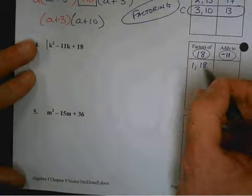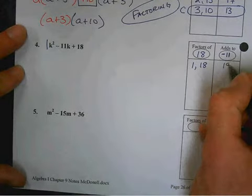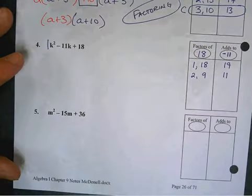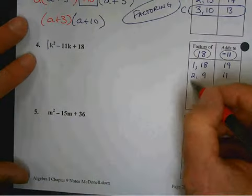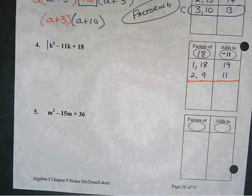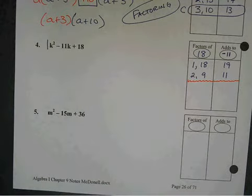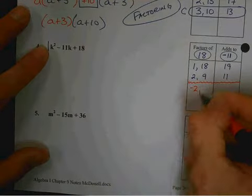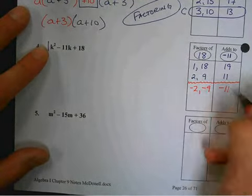Factors of 18. 1 and 18. 1 plus 18 is? 19. Doesn't work. 2 times is? 11. 11. Okay. So now, if you get the opposite of what you want, do we have the opposite of what we want? Yes. If you get the opposite of what you want, and hear me on this one, then you change the signs of all three of these. And watch what happens. The 2 becomes negative, the 9 becomes negative, and the 11 becomes negative. And I ask you, what's negative 2 times negative 9?